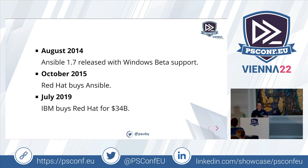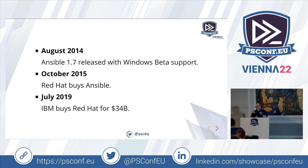A big important milestone for Windows users: in August 2014, Ansible 1.7 was released with Windows beta support. We're currently at Ansible Core version 2.13, so it's come a long way — we've had Windows support for eight years and it's pretty mature. Only two and a bit years after Ansible was first written, Windows support was added. In October 2015, Red Hat bought Ansible. Then IBM came along in July 2019 and bought Red Hat — and therefore Ansible — for 34 billion dollars.